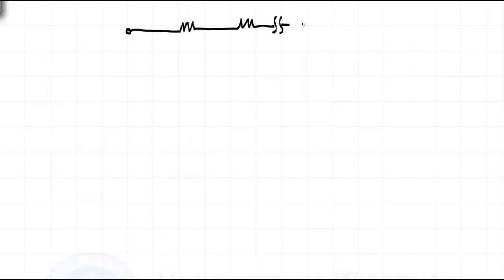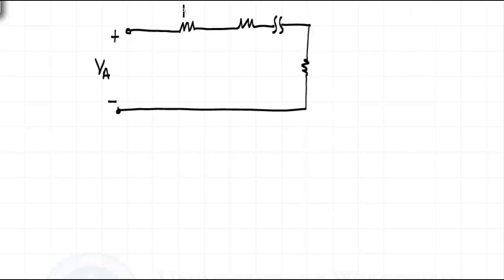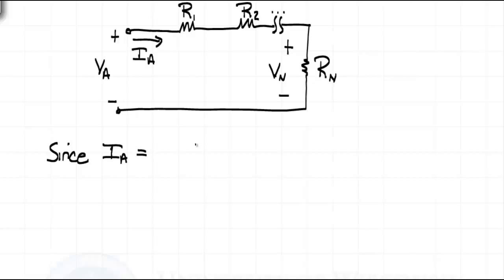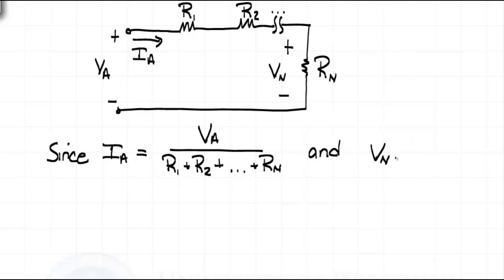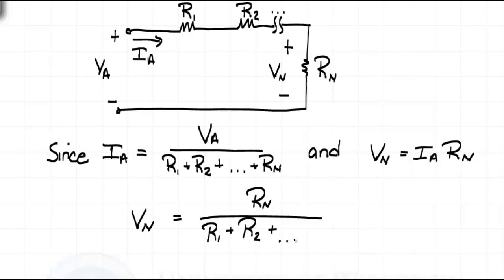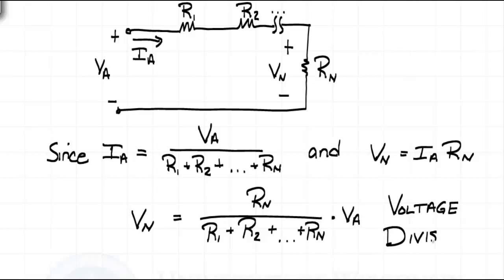When we know the voltage across a series of resistors, we can determine the voltage of any individual resistor by multiplying the resistance we're interested in divided by the equivalent resistance of all resistors in series, times that known voltage. This will be true no matter how many resistors there are, because series resistors all have the same current through them. That current will always be the voltage across the series combination divided by the sum of resistors, and the voltage is always equal to that current times the resistance. So the voltage across any resistor Rn is Rn divided by the equivalent resistance of the series combination, times the voltage seen by that combination. This principle is called voltage division.